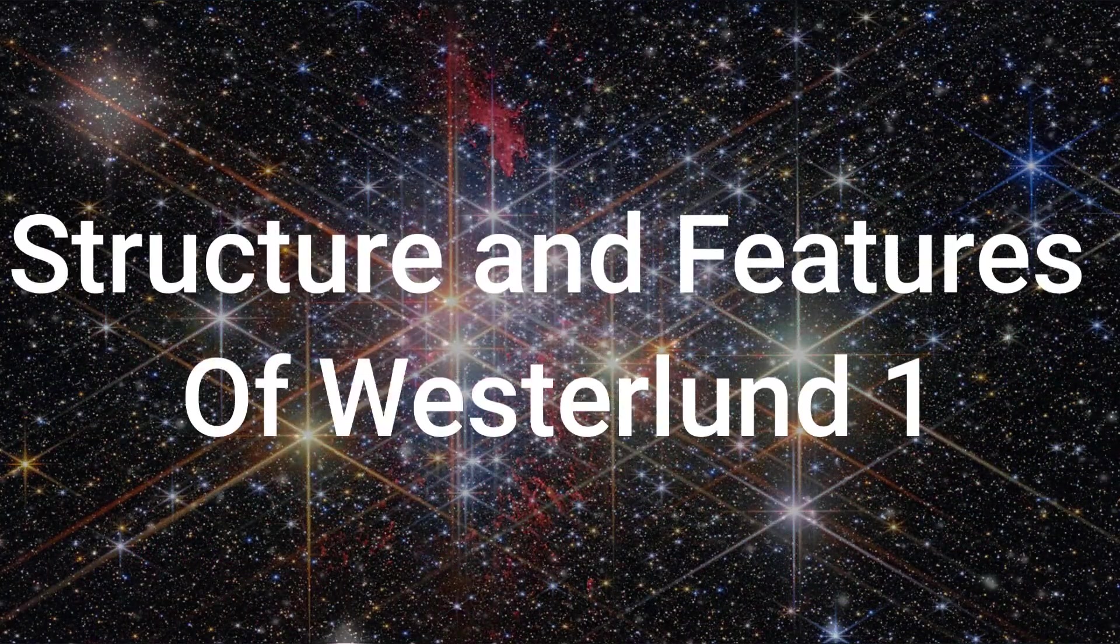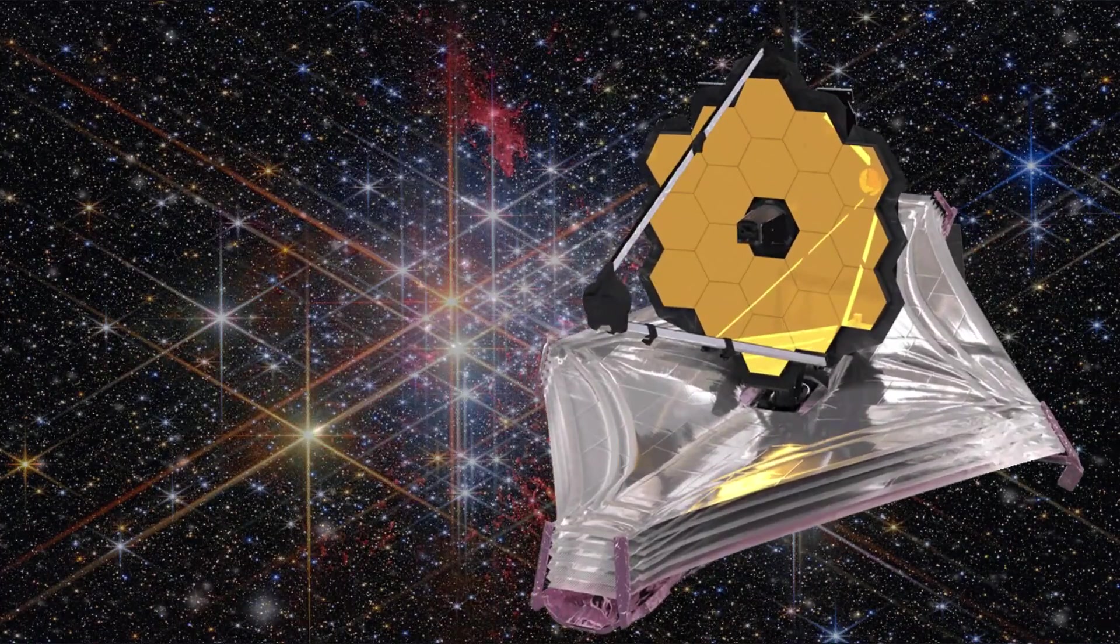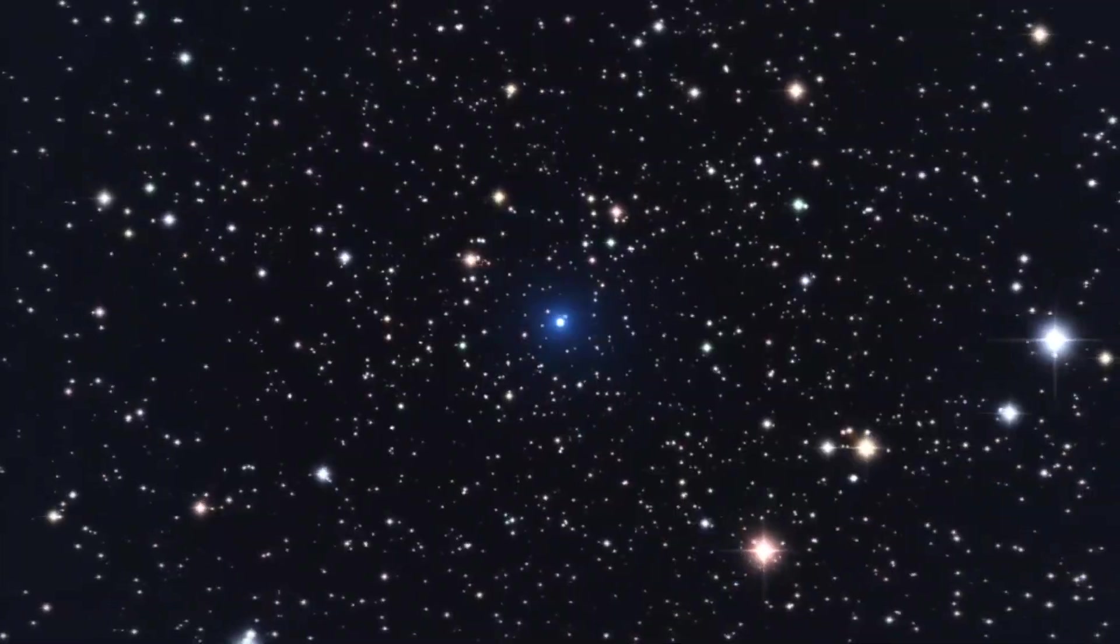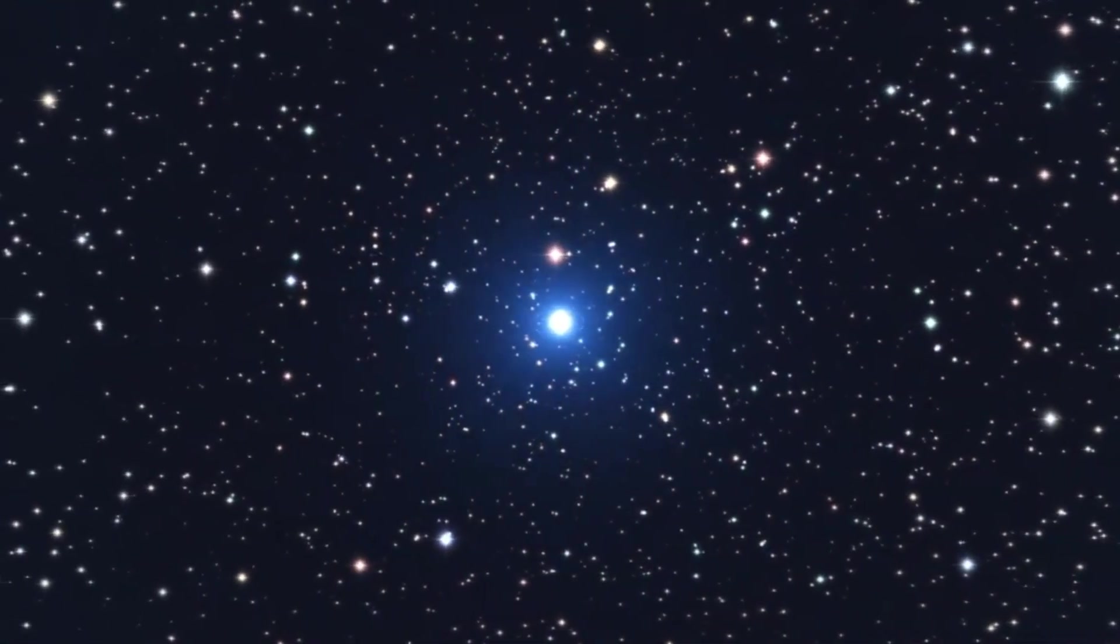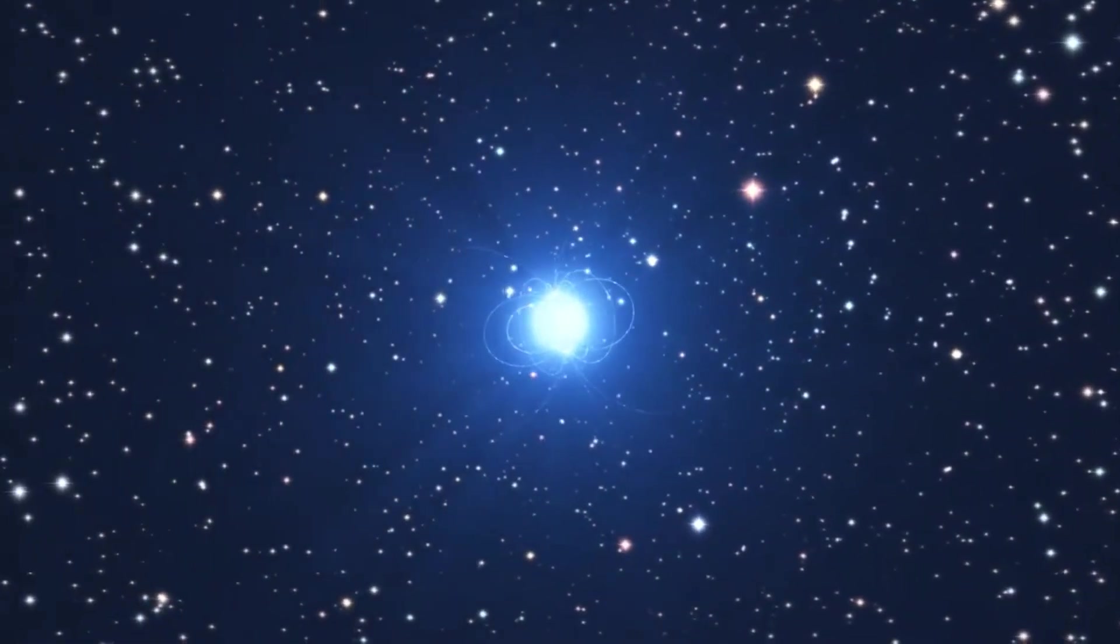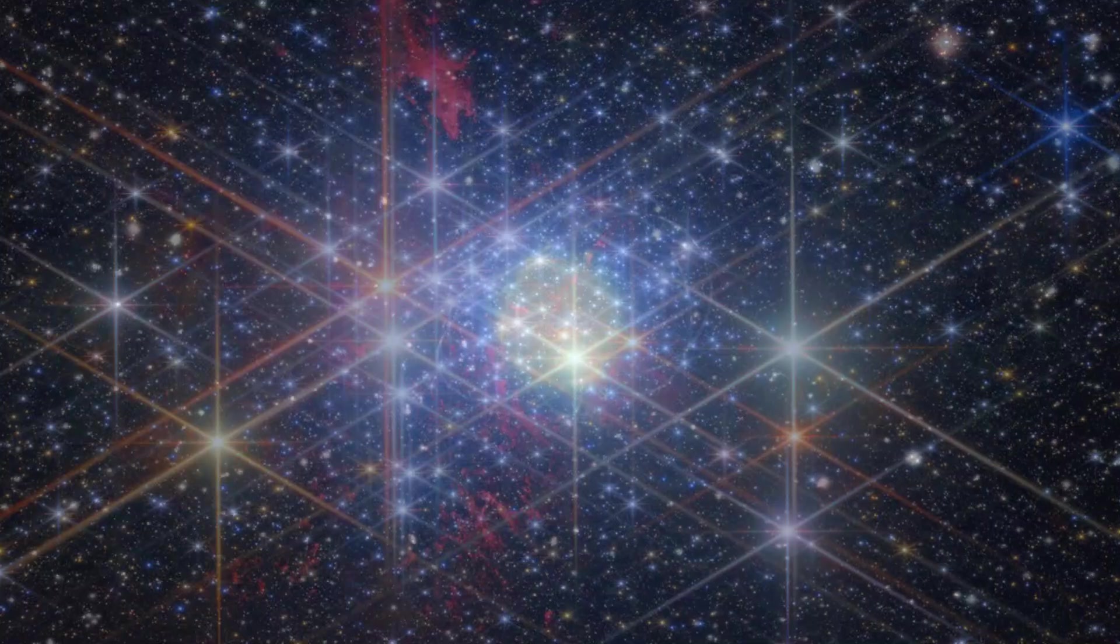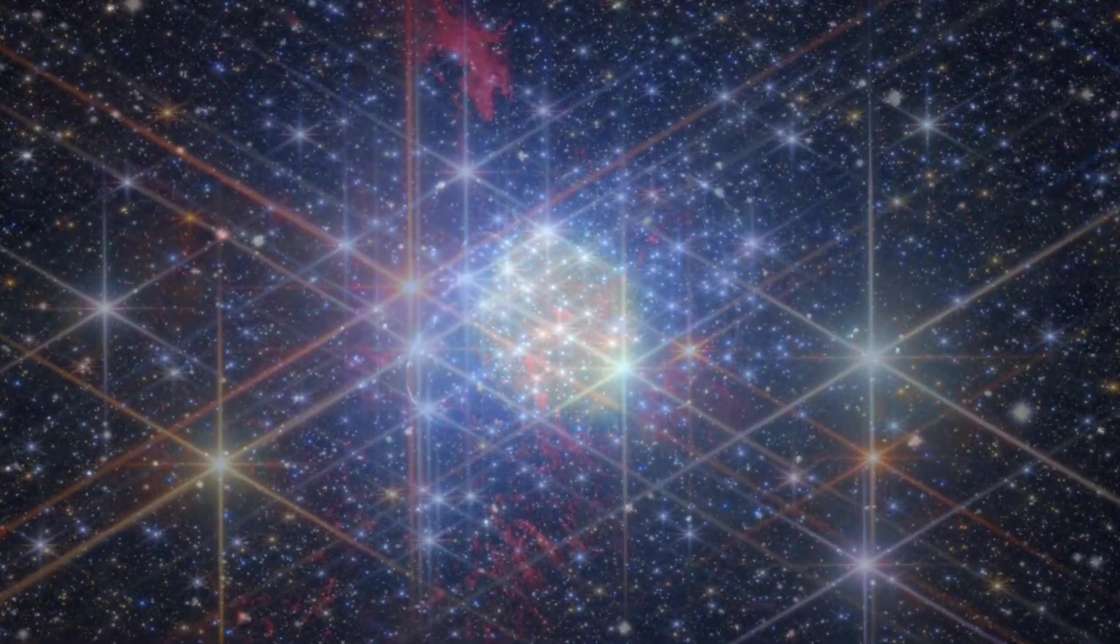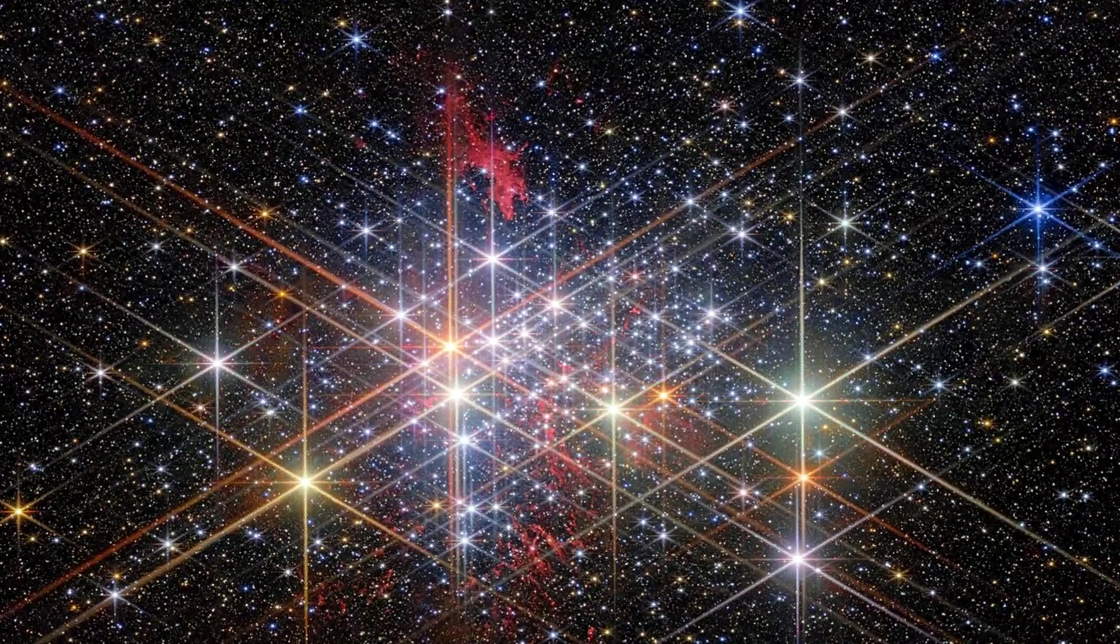The James Webb Space Telescope has provided an unparalleled view of Westerlund 1, allowing astronomers and enthusiasts alike to peer into the intricacies of this dense and dynamic star cluster. The image reveals a dense collection of stars with six large and two small diffraction spikes, a characteristic of the telescope's optics, adding a captivating aesthetic to the already brilliant cluster.